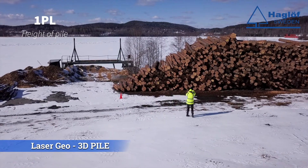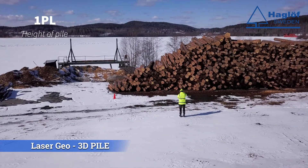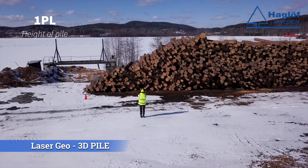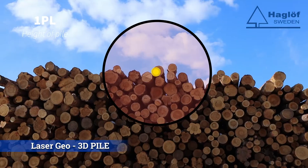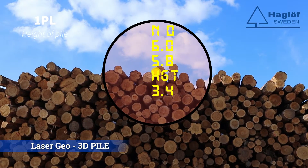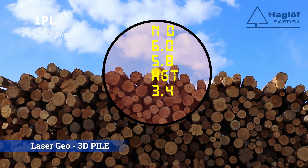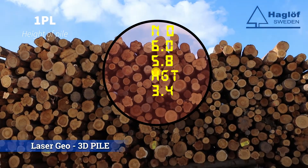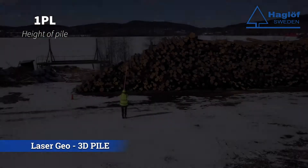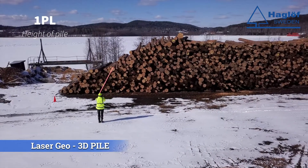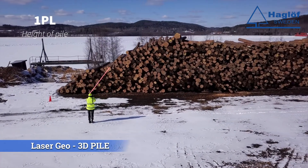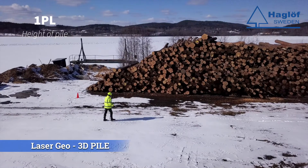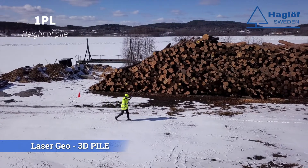After the length has been measured and saved for the pile, select Method Height 1PL. Aim with the aim point site on the top of the pile and do a short press to fire the laser. Continue aiming until the site goes out and a short signal is heard. The value will then show in the heads-up display.